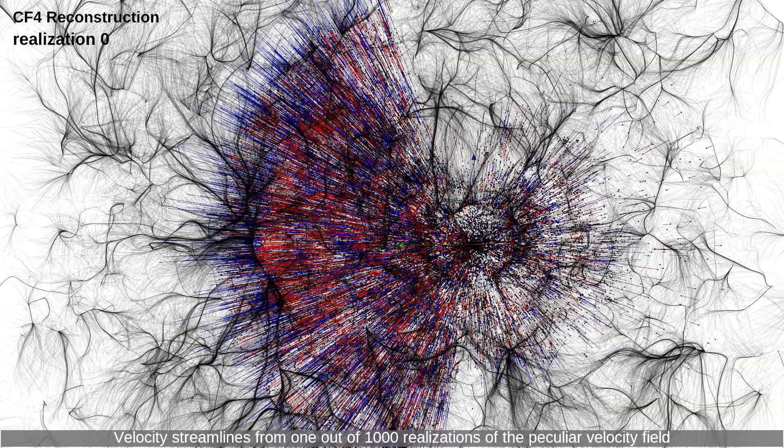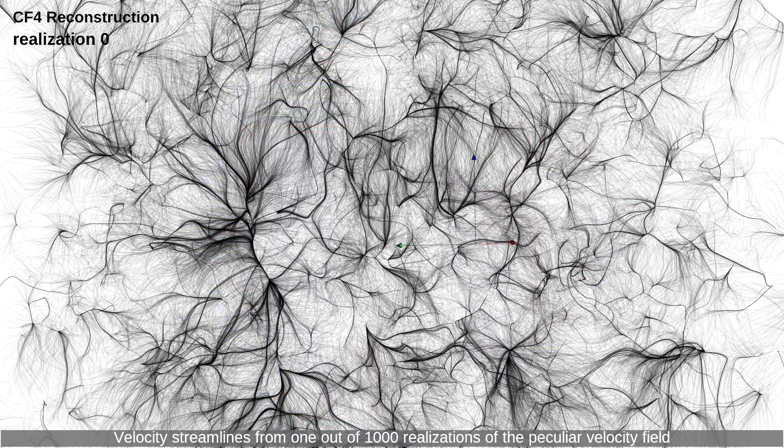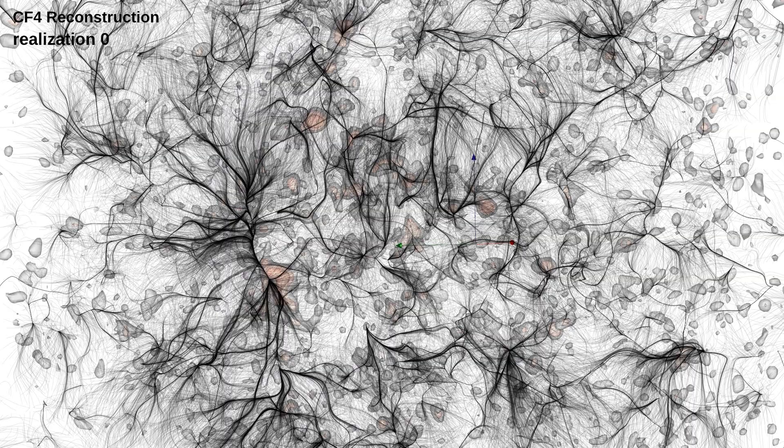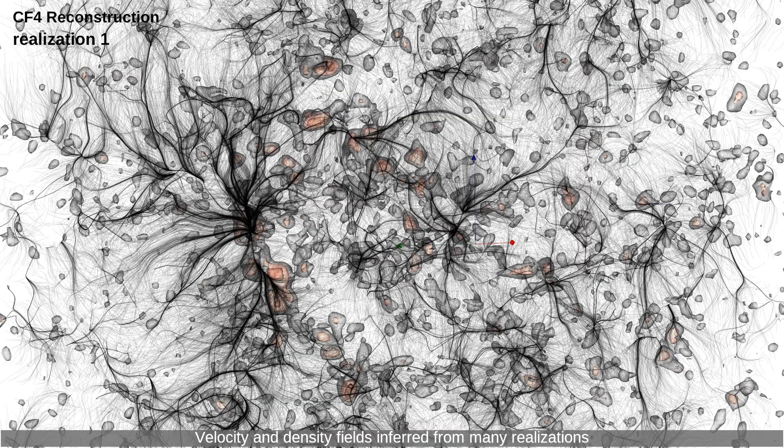Velocity streamlines from 1 out of 1,000 realizations of the peculiar velocity field. Isosurfaces of the overdensity field inferred from 1 out of 1,000 realizations. Velocity and density fields inferred from many realizations.